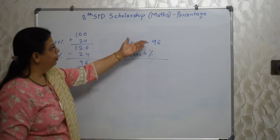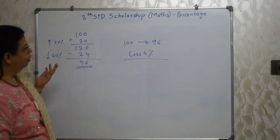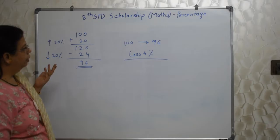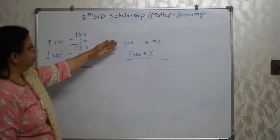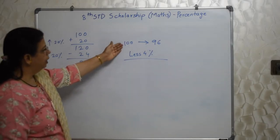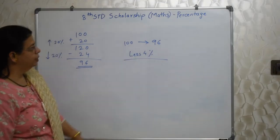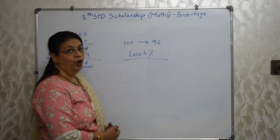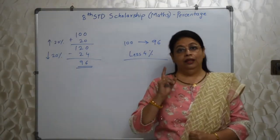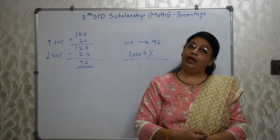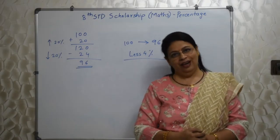We just took the base as 100, worked out the implications of the increase and decrease, and then compared. Since the base was 100, percentage calculation becomes very easy — just find the difference: 100 minus 96 = 4. So the price is 4% less. This 100 is a very useful number, especially in percentage problems.